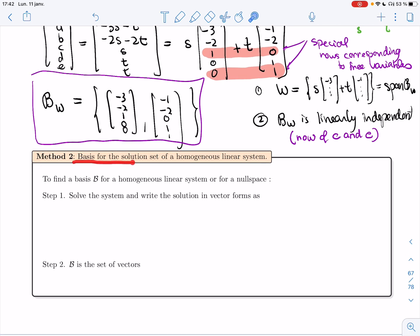All right, so basis for the solution set of a homogeneous linear system. To find a basis B for a homogeneous linear system or for a null space, you solve the system and write the solution in vector form as x equals s_1 v_1 plus s_2 v_2 plus ... plus s_n v_n. And B is the set of vectors v_1, v_2, ..., v_n.